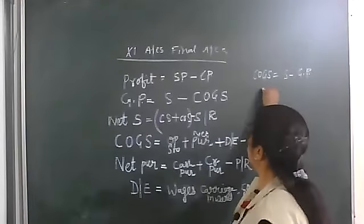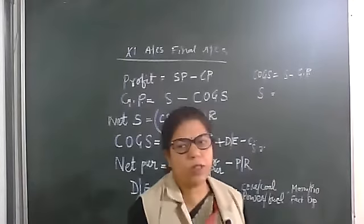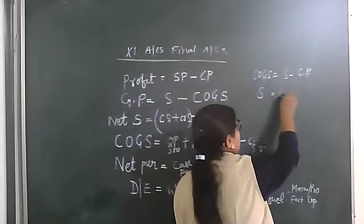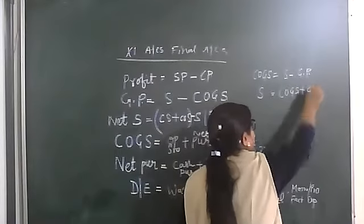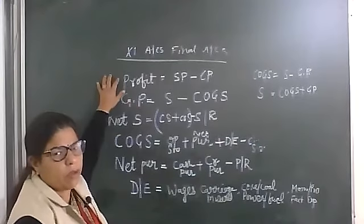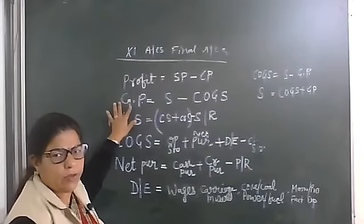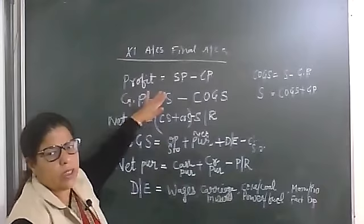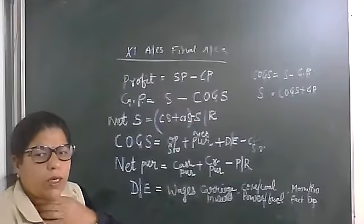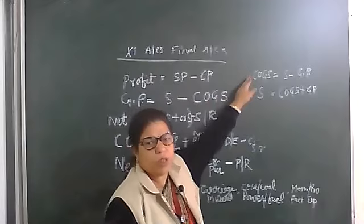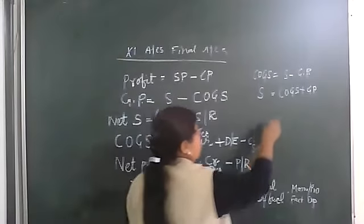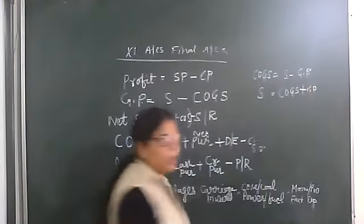Next formula: how to calculate sales? Simple — sales equals COGS plus gross profit. So note these formulas one by one. The basic formula is: gross profit equals sales minus cost of goods sold. From this, cost of goods sold equals sales minus gross profit, and sales equals COGS plus gross profit.